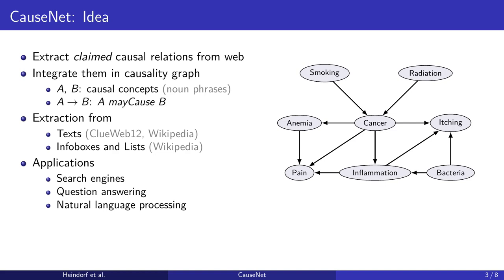Edges express that one causal concept may cause another. For example, we might express that smoking may cause cancer which may cause anemia and pain. We extract the graph both from natural language texts as well as semi-structured sources such as Wikipedia infoboxes and lists.